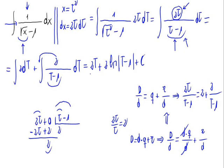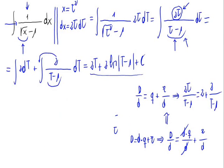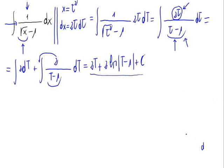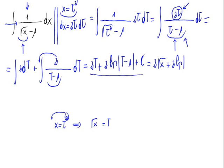Since initially x was our variable, we need to express the result in terms of x, not t. Since x equals t squared, t equals the square root of x. Substituting back, the final answer is 2 times the square root of x plus 2 times the natural logarithm of the square root of x minus 1, plus a constant C in the real numbers.